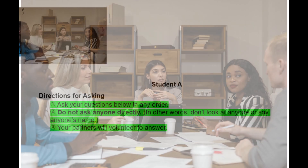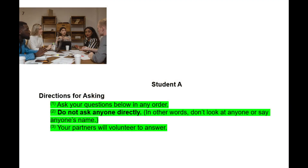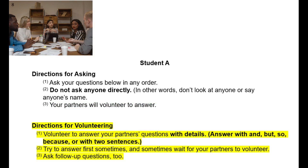Here is student A's paper with the directions for asking questions. The directions say: one, ask your questions below in any order; two, do not ask anyone directly — in other words, don't look at anyone or say anyone's name; and number three, your partners will volunteer to answer. The second set of directions for volunteering says: one, volunteer to answer your partner's questions with details, and answer with and, but, so, because, or with two sentences; number two, try to answer first sometimes and sometimes wait for your partners to volunteer; number three, ask follow-up questions too.